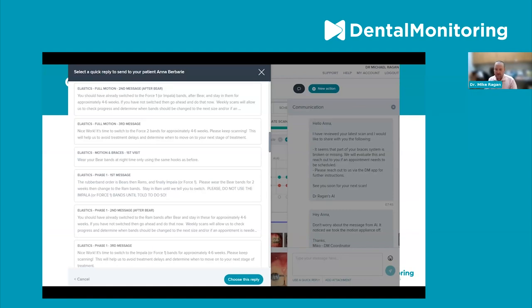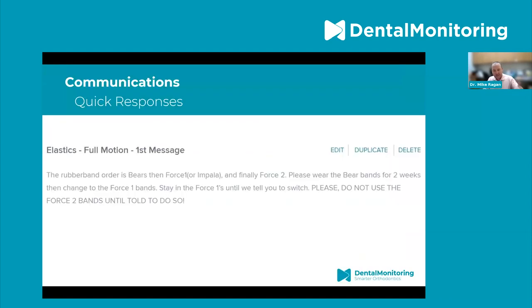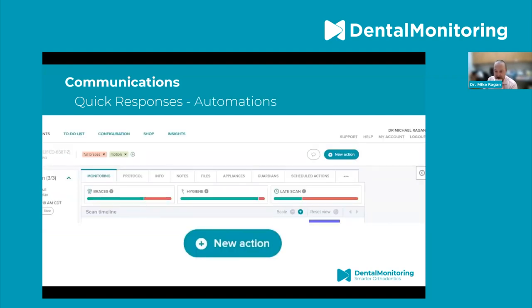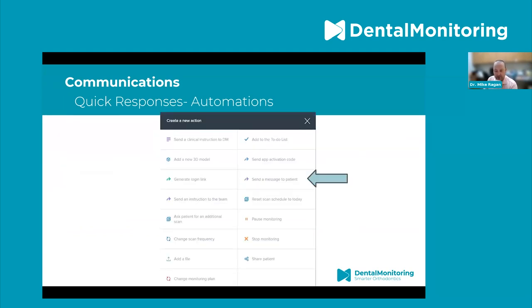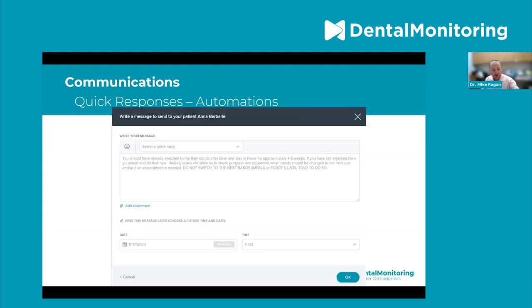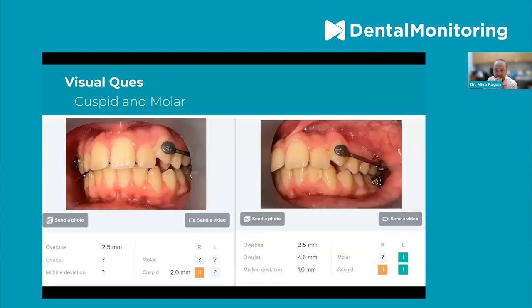There's a better way to send these messages on an automated basis, especially the first two. What we've done as a staff is send the first message the day after the visit so patients get used to the DM process, and then a reminder about what they're going to wear. You can set that automation from the top right of the patient screen — 'new action,' then 'send a message to patient,' use your quick replies from the pull-down menu, set the date and time, and hit OK. Our first message goes the next day. Our second message goes two weeks later, automating the band switch from the bare rubber band to the next size without anybody having to do it manually.